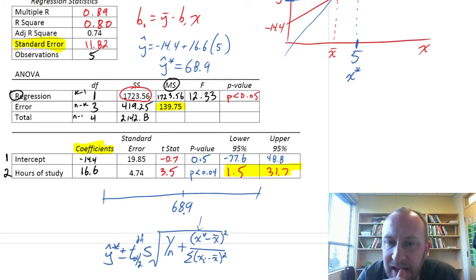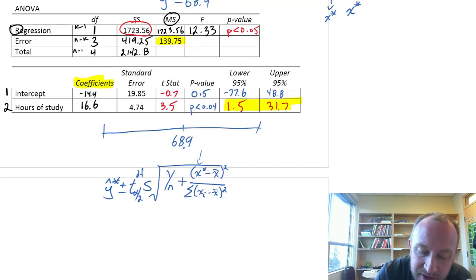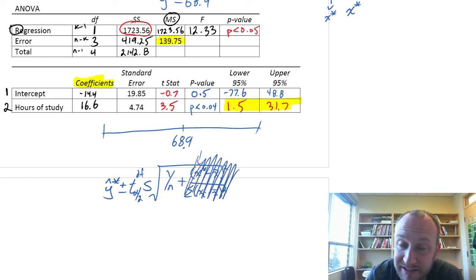In here, x star was 5. Now, in this formula, we can see, what if x star is equal to that sample mean, that mean value of our independent variable? If that were the case, then this whole term here disappears, because that numerator would be equal to 0.